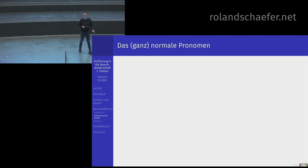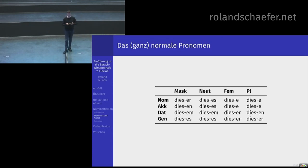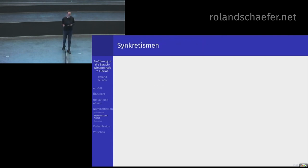Wir müssen nochmal über die Formen im Detail reden. Das hier sind die Formen vom normalen Pronomen: dieser, diese, dieses; jener, jene, jenes und so weiter. Sie kennen die Formen alle. Können wir über diese Formen noch mehr sagen? Wir könnten viel sagen. Was wir uns fragen können, ist: wo ist denn jetzt das Vier-Kasus-System? Man behauptet ja immer, das Deutsche hätte vier Kasus.